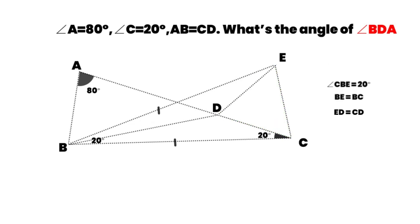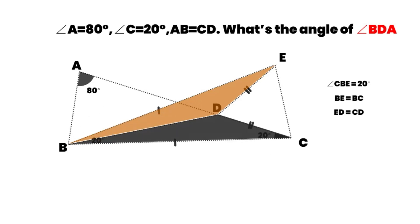Between triangle CBD and triangle EBD, there is a common side BD. Meanwhile, BE is equal to BC. ED is equal to CD. Therefore, these two triangles are congruent triangles.